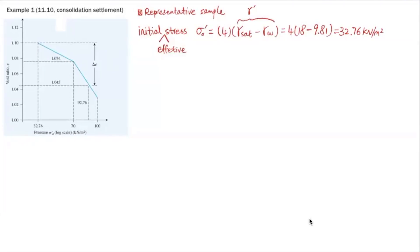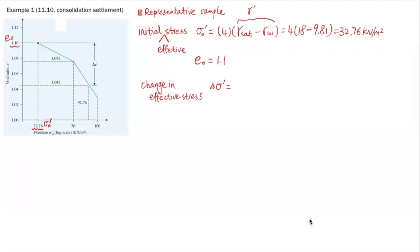So that's the initial effective stress at the middle of the clay layer — that's where that representative sample was taken. The initial void ratio E naught corresponds to sigma naught prime of 32.76 kN/m², and the initial void ratio is 1.1. The changing effective stress is the surcharge added on top, which causes consolidation — that is 60 kilonewton per meter squared.